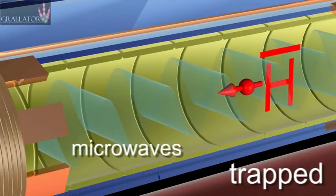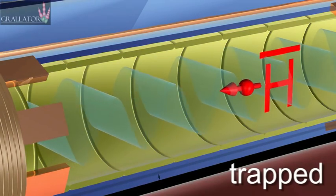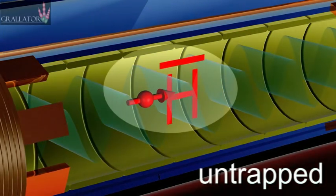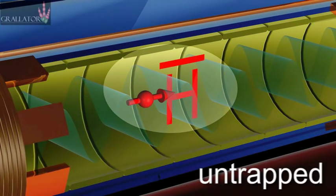You see the magnetic moment, sort of like a compass needle in the antihydrogen atom, has to point in one direction for it to be trapped. The microwave radiation flips that magnetic direction, and that means that the atom is untrapped and comes out. And that's what happens.